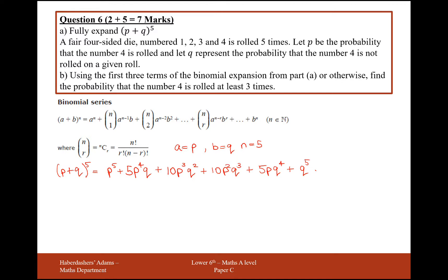The next part is a little bit more complicated. A fair 4-sided die numbered 1, 2, 3, and 4 is rolled 5 times. Let P be the probability that a 4 is rolled and Q the probability that a 4 is not rolled. Given that it's a fair 4-sided dice, P equals a quarter, and Q equals the probability of it not being a 4, which is three quarters.